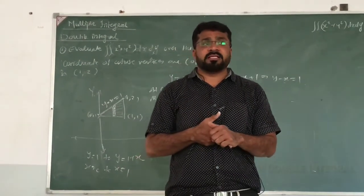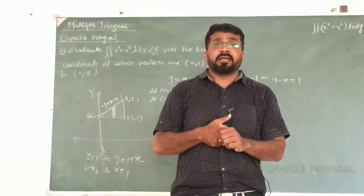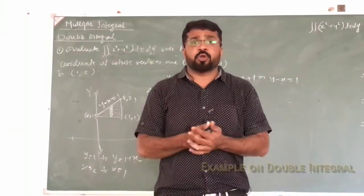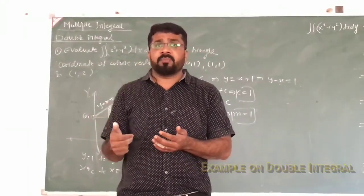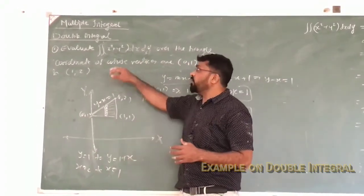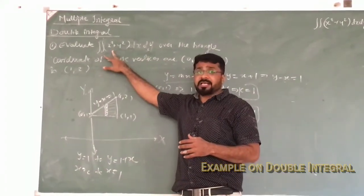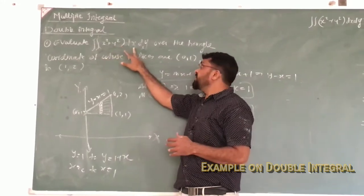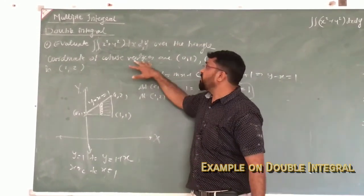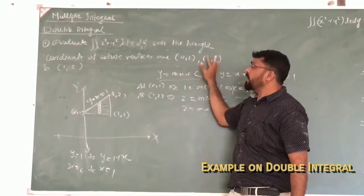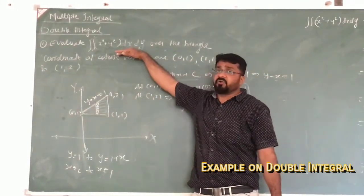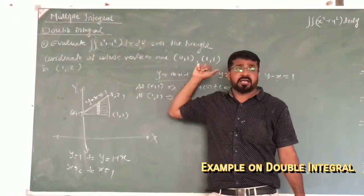Let us see today the topic that is double integral. We are solving one example of double integral where the limits are not given. We have to evaluate the double integral of x squared plus y squared dx dy over the triangle whose vertices are (0,1), (1,1), and (1,2).